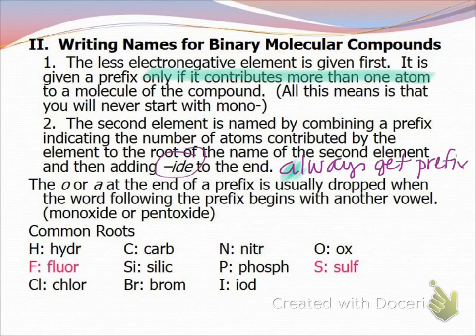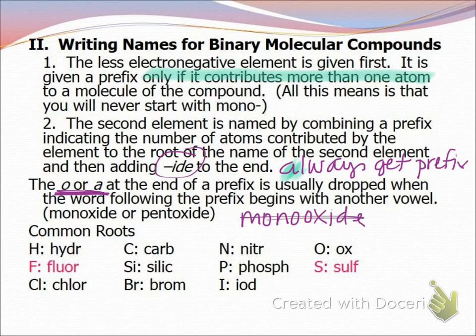We change the ending to IDE. If we have something that ends in an A or an O at the end of the prefix, we usually drop that. An example would be monoxide and pentoxide — we wouldn't write mono then oxide because it looks funny, so we drop that O and call it monoxide. Here are some common root words: hydrogen becomes hydride, fluorine becomes fluoride, nitrogen becomes nitride.